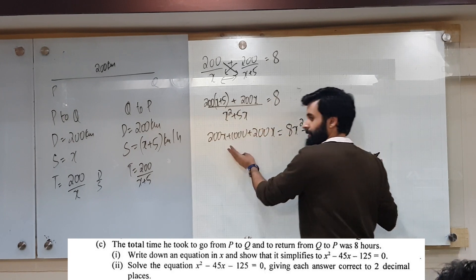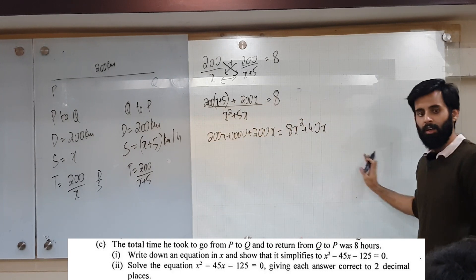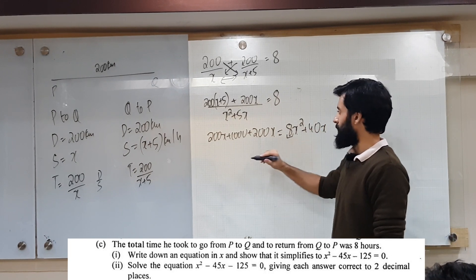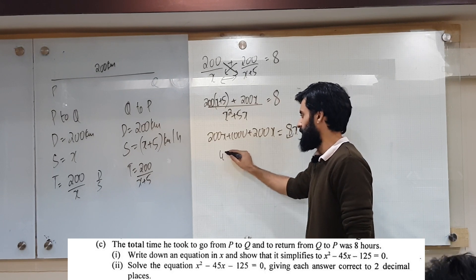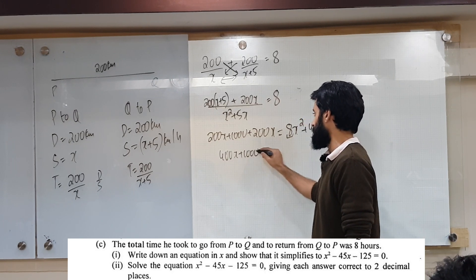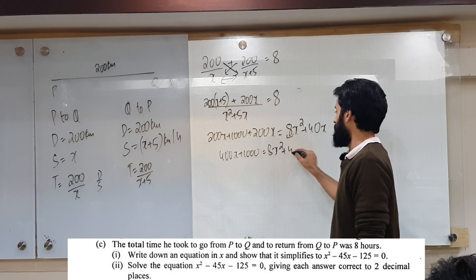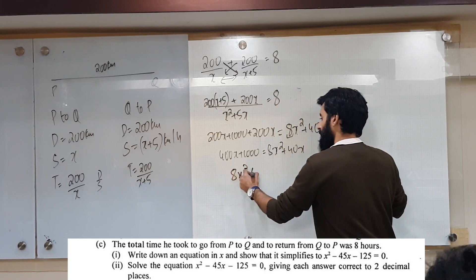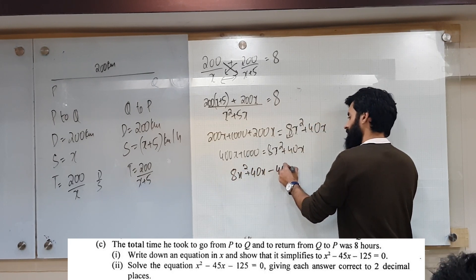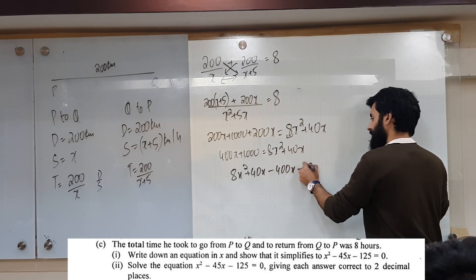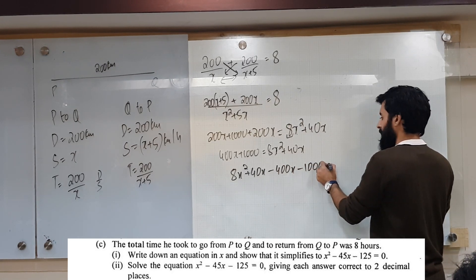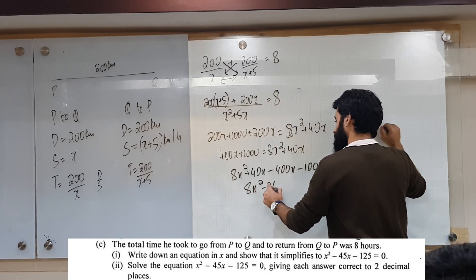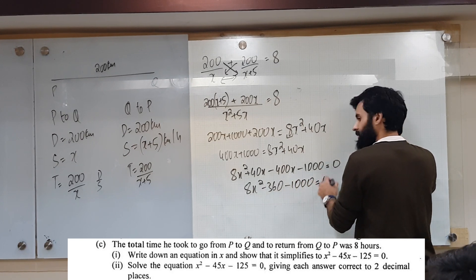We want to keep x squared positive, so we bring everything to the right hand side. Simplifying the left: 400x plus 1000 equals 8x squared plus 40x. Bringing 400x and 1000 to the right gives 8x squared minus 360x minus 1000 equals 0.